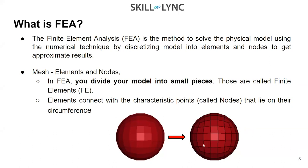This conversion changes the model into a set of numerical equations, and by applying boundary conditions we analyze and derive approximations. Each small entity is called an element, and the characteristic points on the circumference of your component are called nodes. Upon connecting all nodes you form an element. There are 1D, 2D, and multiple types of elements, and you select which to use based on the application.